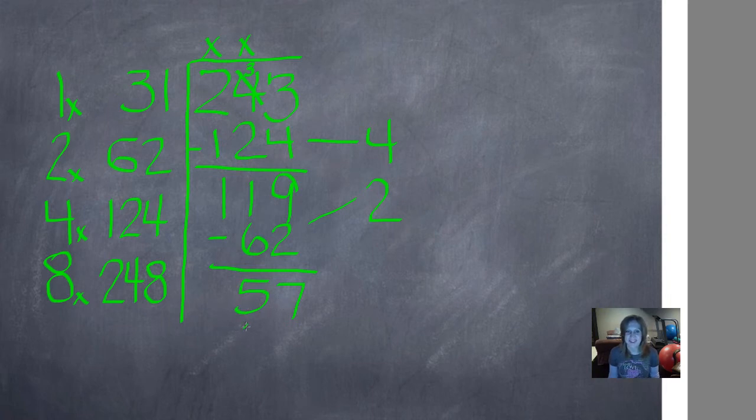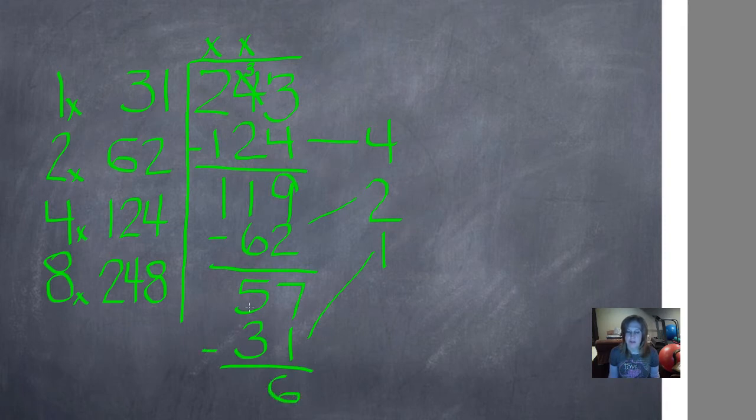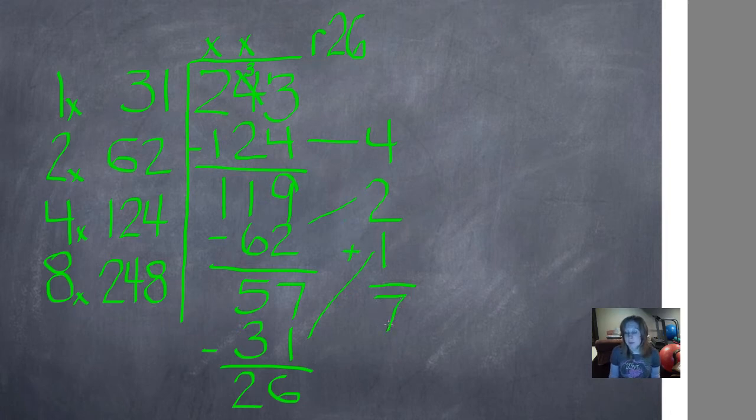Closest number without going over is 31, and the number next to 31 is a 1. It's time to subtract. 7 minus 1 is 6, and 5 minus 3 is 2. So now there's no number that will divide into 26 without going over, and our remainder is less than our divisor of 31, so we're going to write remainder 26 and add up our quotient. 4 plus 2 is 6 plus 1 is 7, and remember that it's okay for your remainder to be bigger than your quotient. It just can't be bigger than your divisor. So 7 remainder 26 is correct, and to check it, multiply 31 times 7, get your answer, and add 26 to it. Your answer to that should be your dividend of 243.